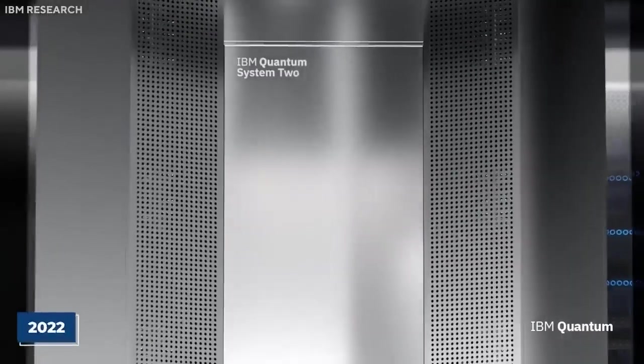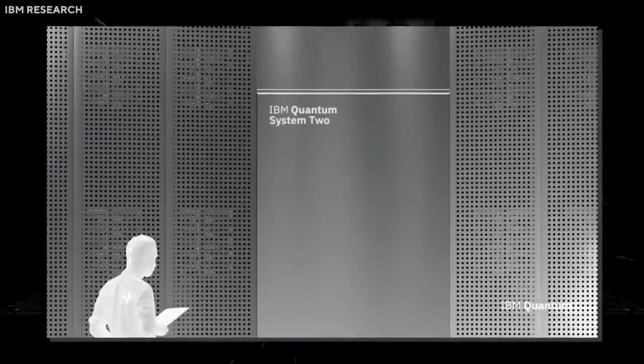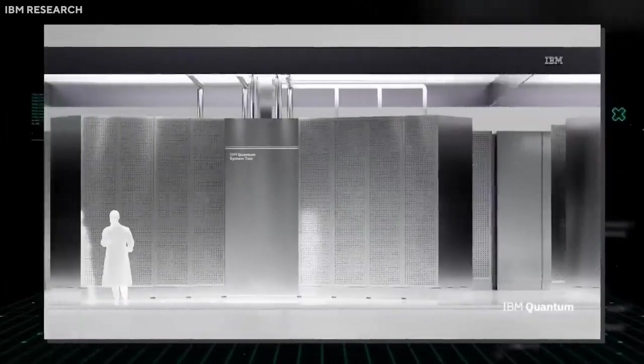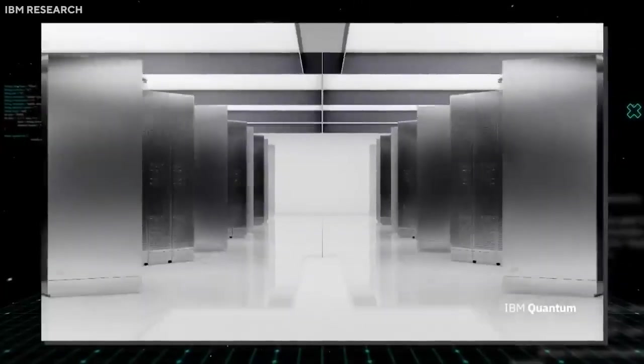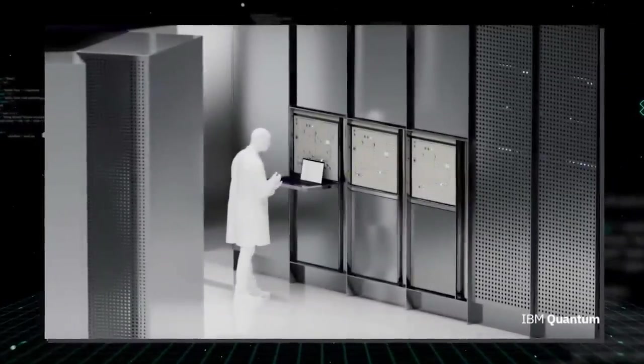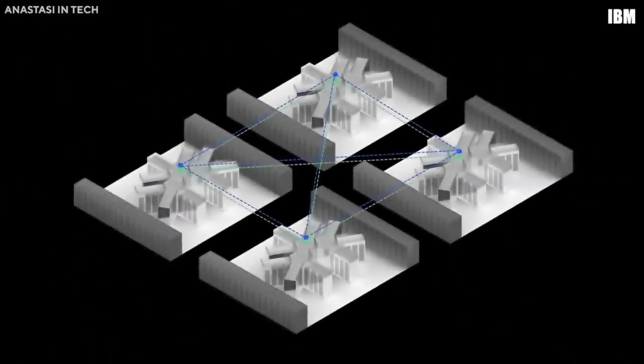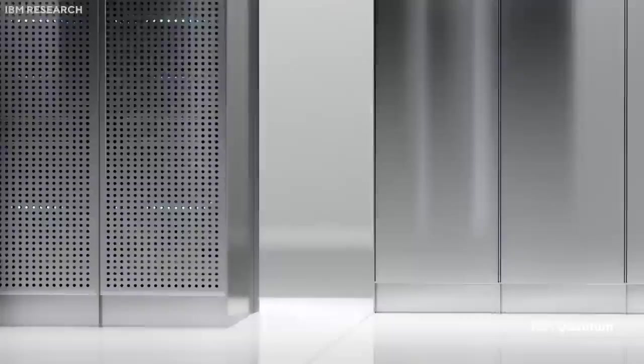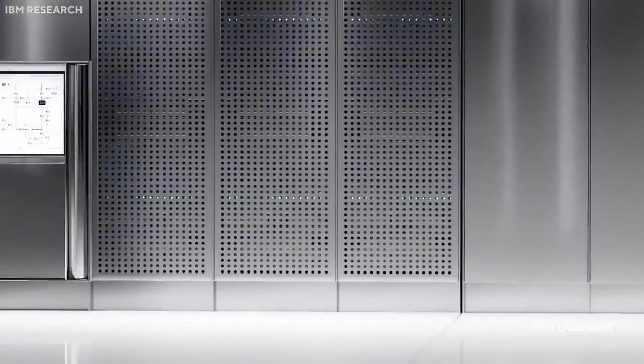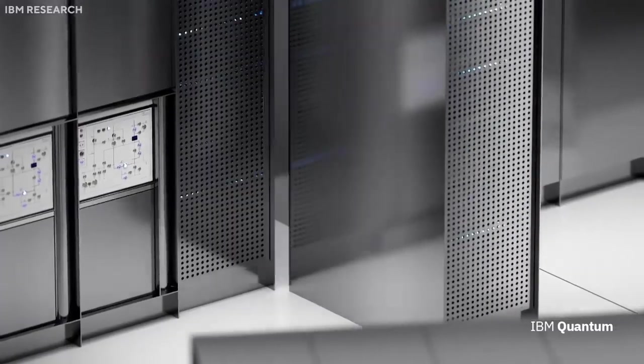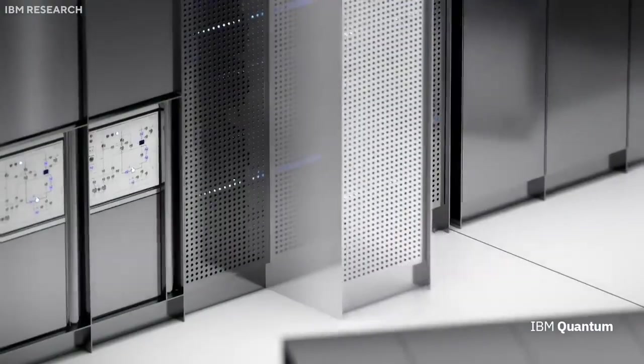IBM plans to leverage multiple Quantum System 2s to create a powerful ensemble of thousands of qubits. This modular approach mirrors the flexibility and scalability observed in classical data centers, enabling the seamless integration of multiple quantum systems. The Quantum System 2 will serve as the building block upon which the 100,000 qubits supercomputer vision will be realized.